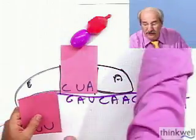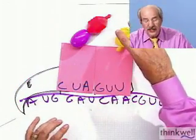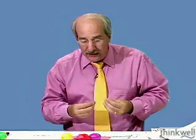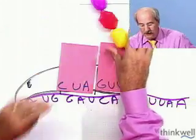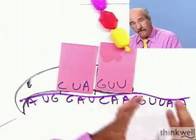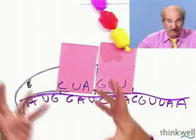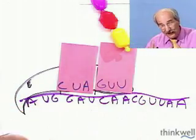GUU can now move into the A site, and it carries an amino acid. Once again, GTP provides energy through a phosphorylated intermediate, we make a peptide bond, and this amino acid gets hooked to the growing chain. The ribosome moves again five-prime to three-prime — or equivalently, the mRNA moves. Elongation continues.